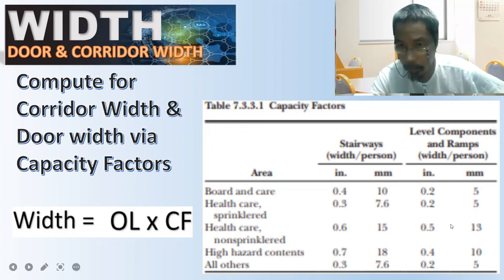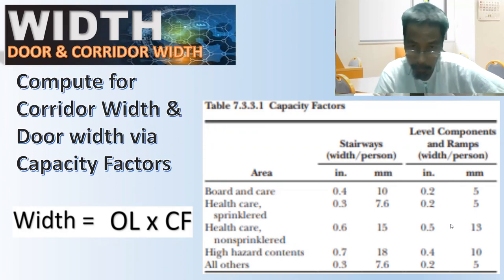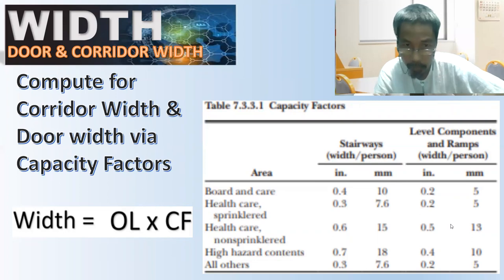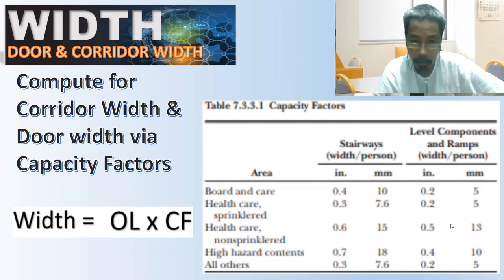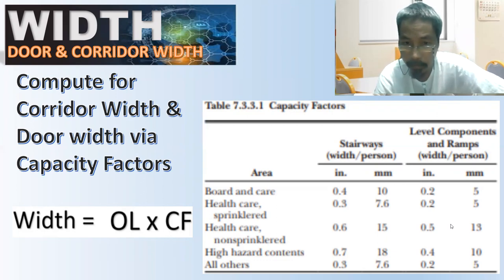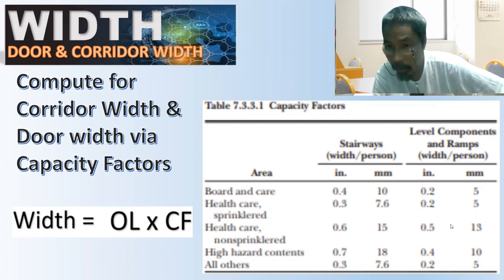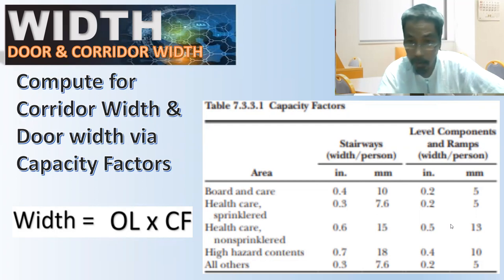Let us look at the table for capacity factors found in Chapter 7 of NFPA 101, specifically Table 7.3.3.2.1. This table lists capacity factors for different occupancy types: board and care, healthcare, healthcare non-sprinkler, high hazard contents (HHC), and all others. We can memorize the width values for staircase and corridor under these categories.